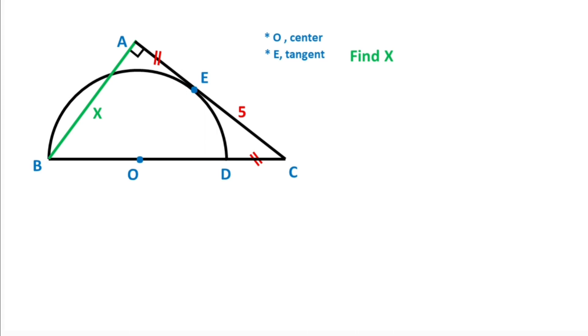First of all, let's call these equal sides a units. If we connect the center with point E like this, here must be equal to 90 degrees because of the tangent. And then let's call these equal sides r because of the radius.